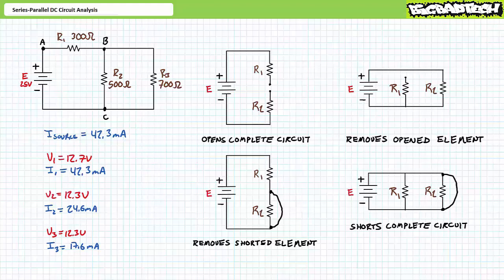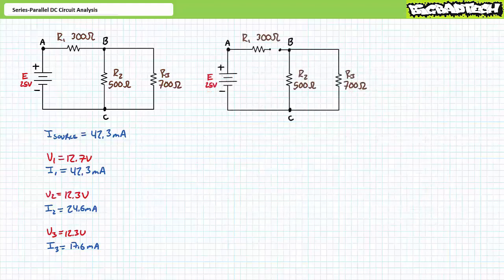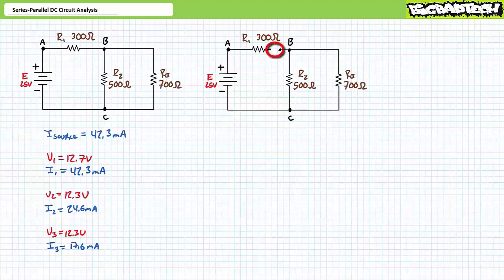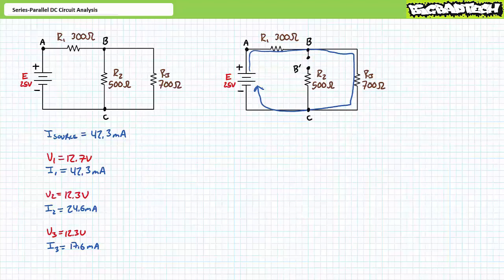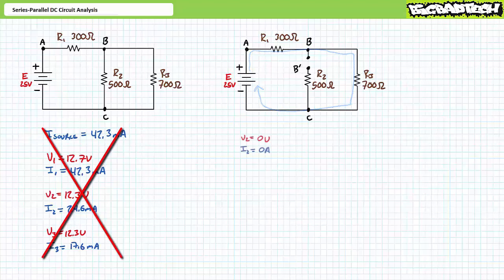For example, consider an open circuit between R1 and the parallel combination of R2 and R3. This type of open has disrupted current flow through the whole system. No current flows through and no voltage is dropped across any individual element — all voltage will be dropped across this open. Opens in series-parallel circuits needn't be as dramatic. Consider one lead of R2 dangling out in space: R2 has been effectively removed from this circuit. However, current continues to flow through R1 and R3, now in a series configuration. The opening of R2 has fundamentally changed the nature of the series-parallel circuit and all of our previous analyses are invalid.